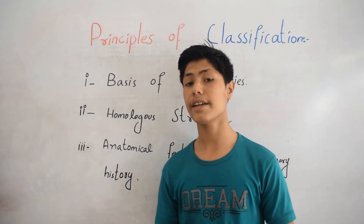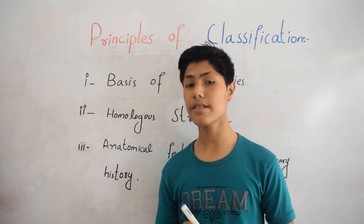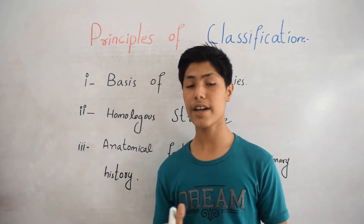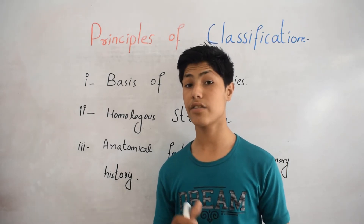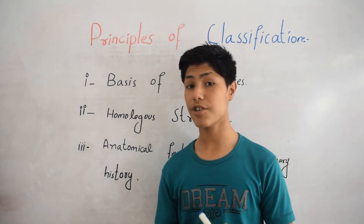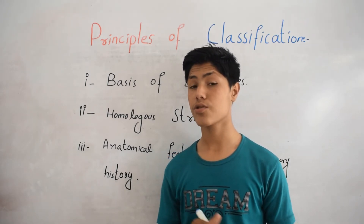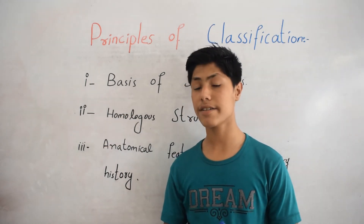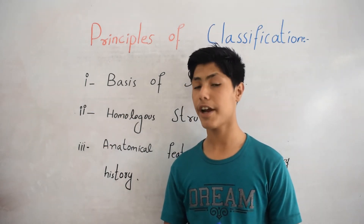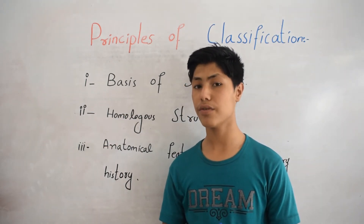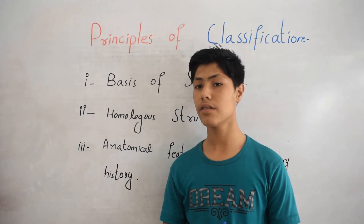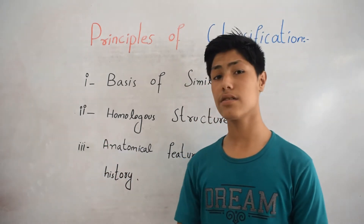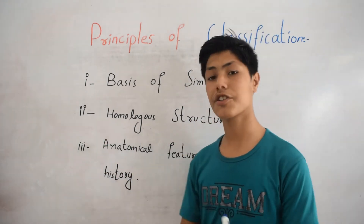If organisms are similar to each other — their characteristics, their reproduction are the same — then these organisms are classified into one group or a closer group.